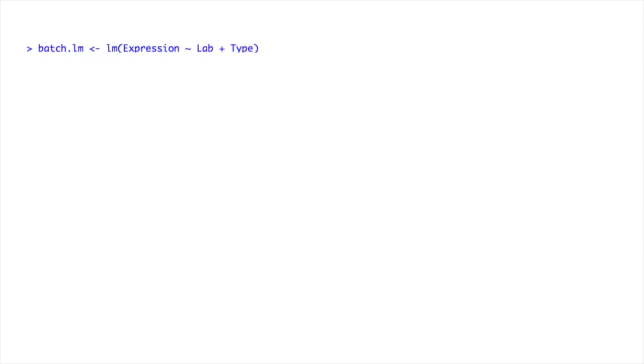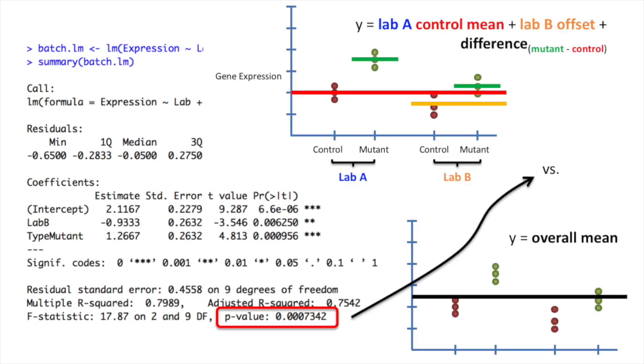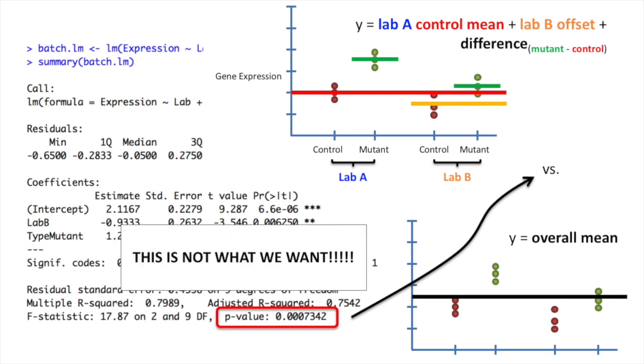Here's our call to the linear models function, and here's the summary of everything that the linear model function did for us. Just like before, it has the multiple R-squared and the adjusted R-squared values, and then a p-value in the lower right-hand corner. However, this is not what we need. This p-value represents how much better our fancy equation fits the data compared to an equation that is far too simple. This equation is just y equals the overall mean, and it does not test if there is a difference between control and mutant data. This is not what we want.